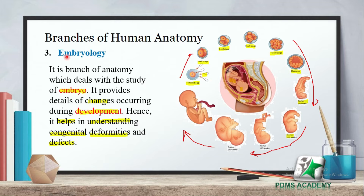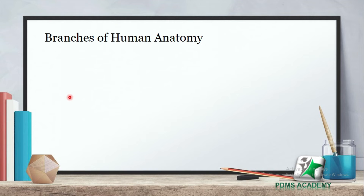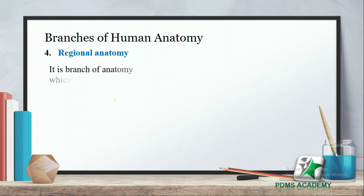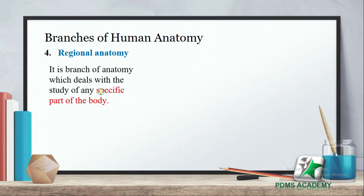In embryology we study the embryo. This knowledge helps us understand embryo development. The next branch is regional anatomy. It is a branch of anatomy which deals with the study of specific parts of the body — specific regions.